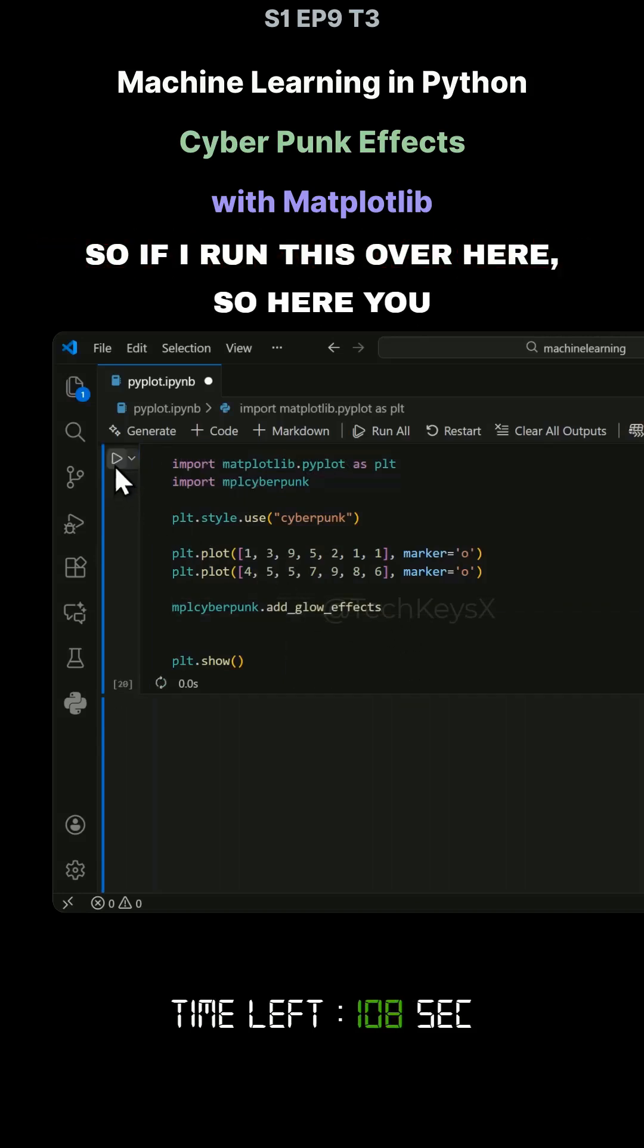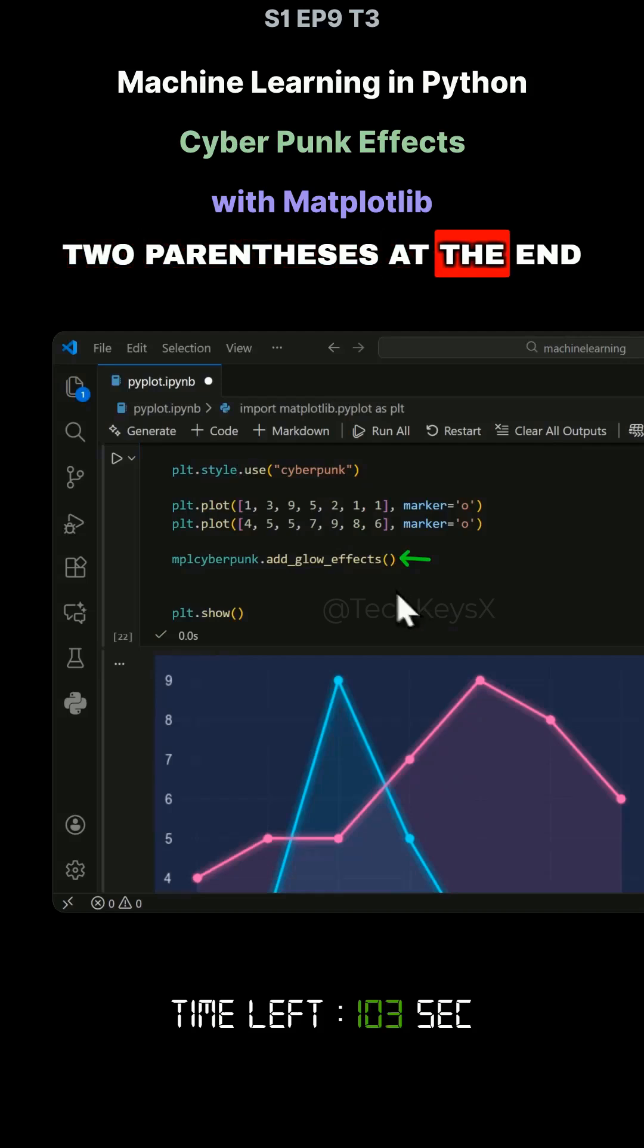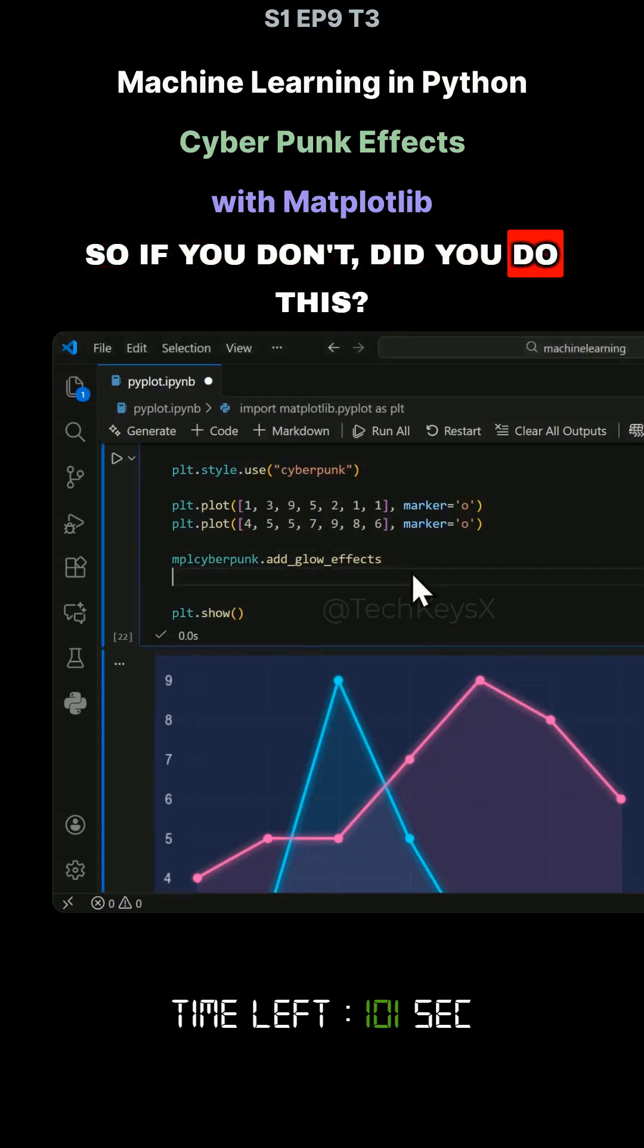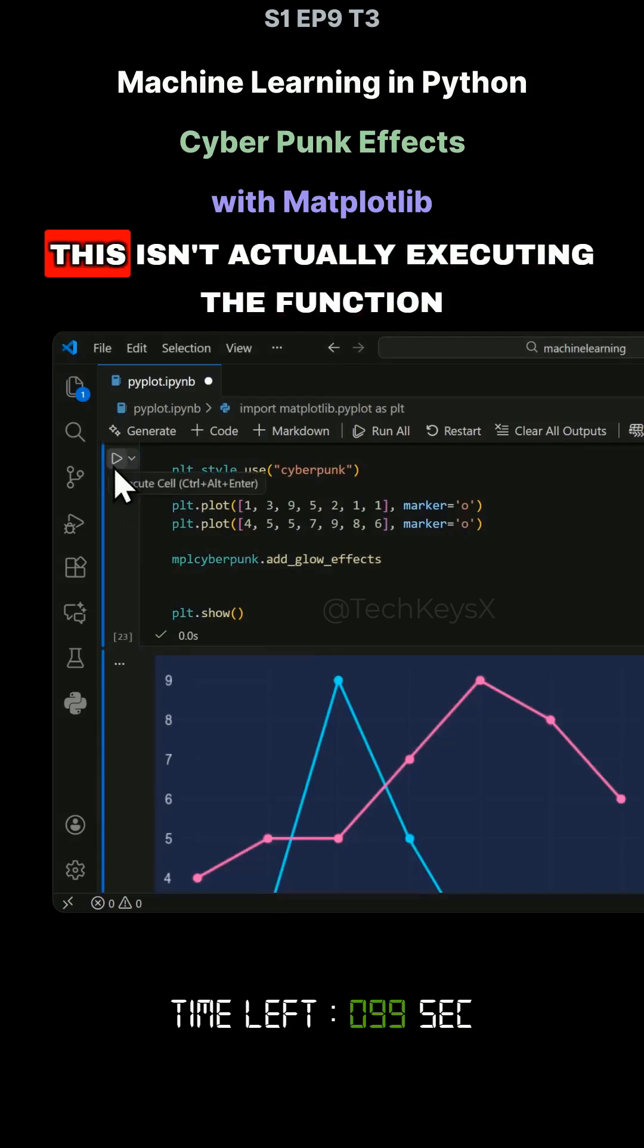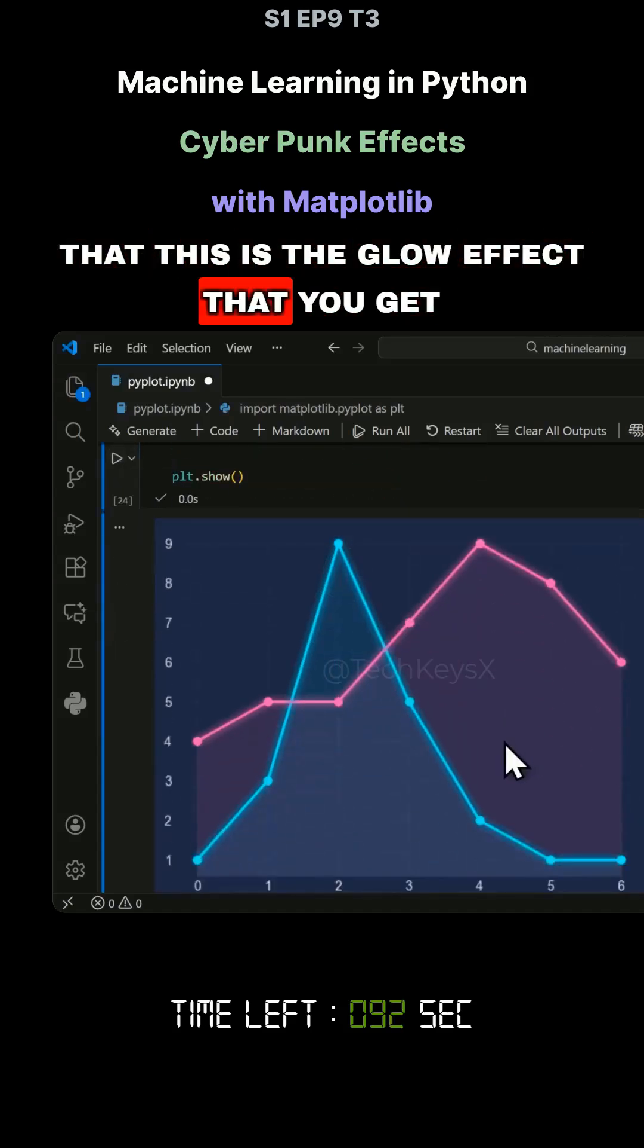So if I run this over here, you can see that you must include these two parentheses at the end. So if you just do that, then remember this isn't actually executing the function. So you must add the parentheses. And once you add them, you can see that this is the glow effect that you get.